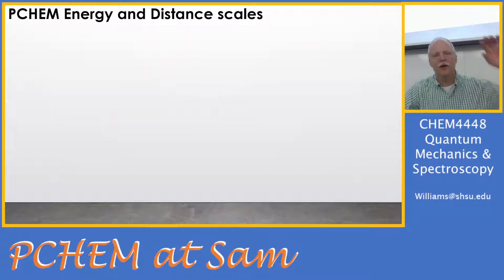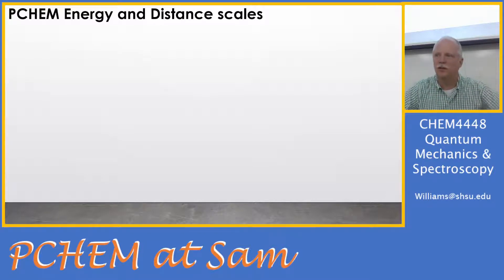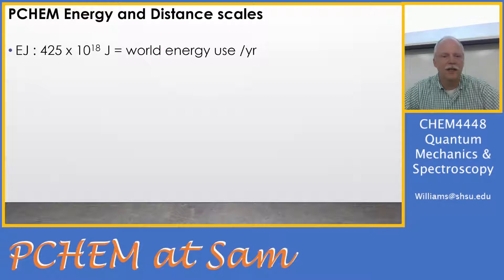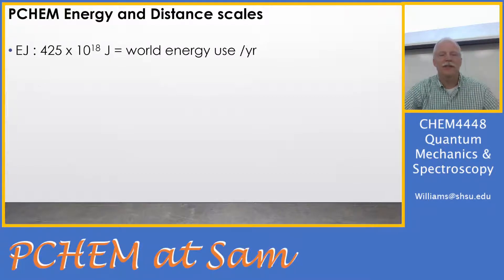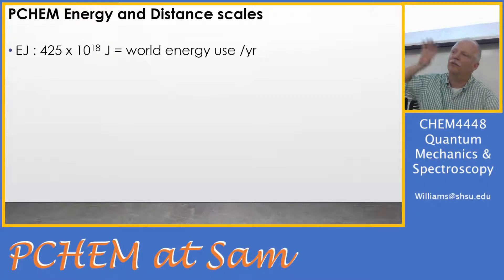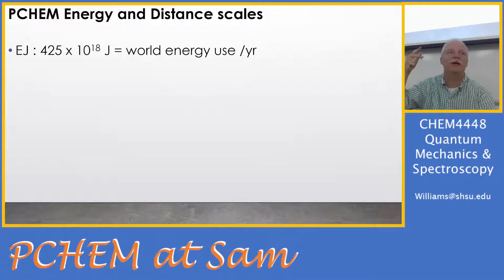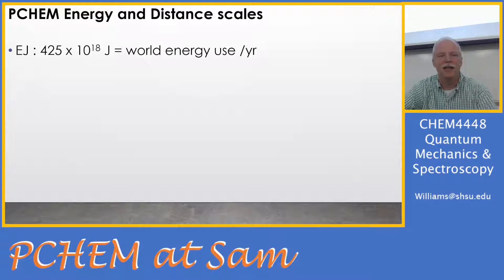There's a wide range of energy and distance scales in PChem 1 and 2. At the end of the year, we'll be dealing with the global scale of energy use — 425 times 10 to the 18 joules, which is an exajoule. That 'E' prefix is a metric prefix you probably haven't used. You've used gigabytes and terabytes, maybe petabytes, but above that is exa — 10 to the 18. That's the scale of global energy use.